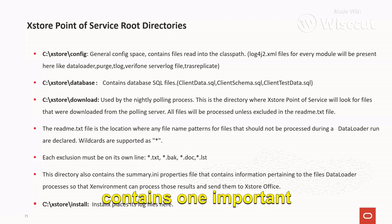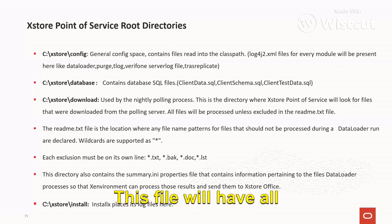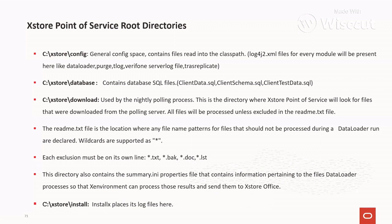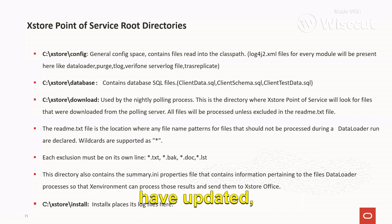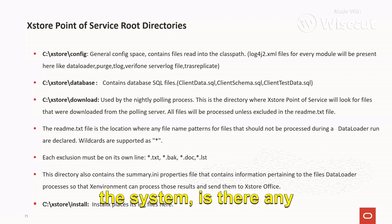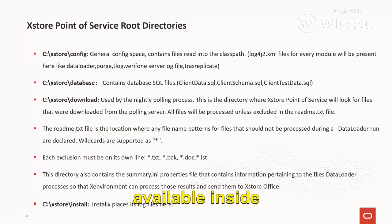This directory also contains one important file: the summary.in properties file. This file will have all the information regarding the data loader processor, so that the X environment can take details from there and update the office. It records how many records were updated, which files were successfully loaded into the system, and whether there were any errors — that kind of information will be available inside this summary.in file.